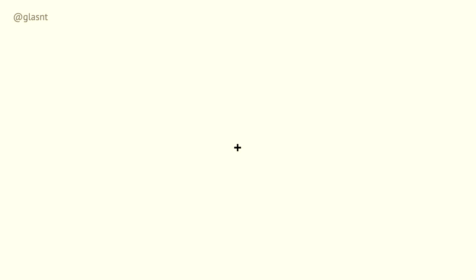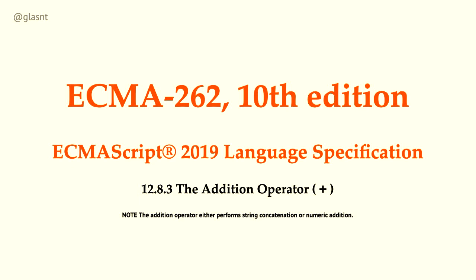Let's dive into ECMA 262, the 10th edition of the ECMAScript 2019 language specification, specifically section 12.8.3, the addition operator, which has a tiny little side note that says the addition operator either performs string concatenation or numeric addition. So consider two variables, A and B. In order to do the plus operation, we need to work out which operation to perform — either addition or concatenation. In order to do that, we're provided an algorithm.